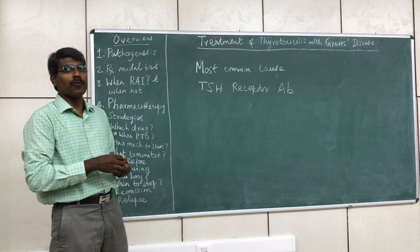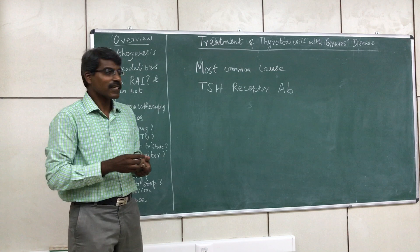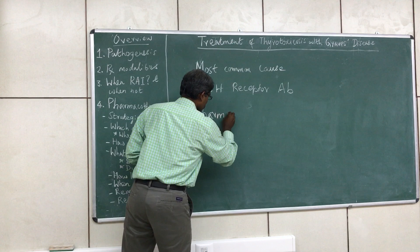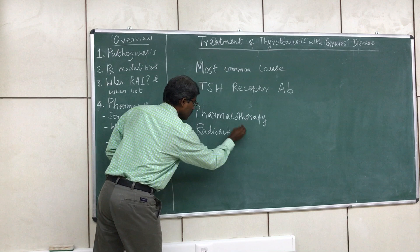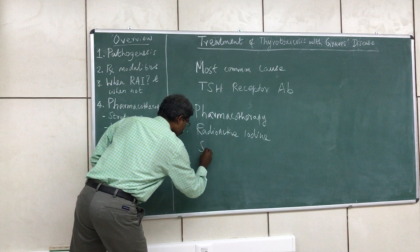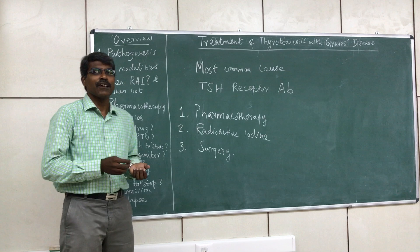Coming to what are the treatment modalities available for this disease, we have three modalities. The first is pharmacotherapy, the second is radioactive iodine, and the third is surgery. There are three modalities of treatment available for this condition. Now let us see which modality is preferred.